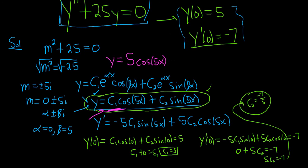Plus c₂ was negative 7/5, so minus (7/5)sin(5x). This is the particular solution.